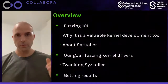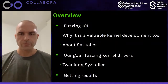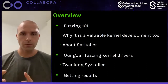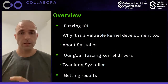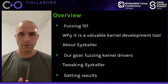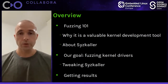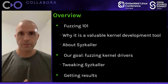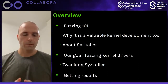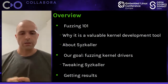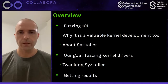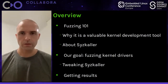Before we begin, let me give you a brief overview of what the talk will be about. First, I'm going to start with a short introduction to fuzzing in general — what it is, how it works, and why it is a valuable tool for Linux kernel development. Then I'll introduce Syzkaller for those not familiar with it, covering its key features and how to configure it. I'll then show how to use it to target a specific driver on a dedicated hardware board, and finally how to get and use results from Syzkaller.